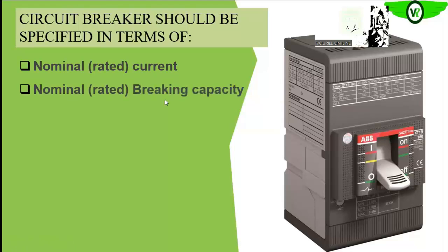Another term to understand is the nominal rated breaking capacity — that is the maximum current that the circuit breaker can break without damaging itself. That is the breaking capacity of the circuit breaker. Normally on the circuit breaker, it is given as the service breaking capacity or the maximum breaking capacity. So we have looked at two parameters: the nominal rated current and the nominal rated breaking capacity.